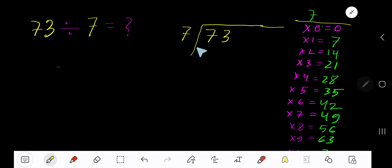73 divided by 7. Here 7 is the divisor, so we need the multiplication table of 7. 7 times 0 is 0, 7 times 1 is 7, 7 times 2 is 14, 7 times 3 is 21, 7 times 4 is 28. To find out the multiplication table of 7, just start with 0 plus 7 equals 7, 7 plus 7 equals 14, 14